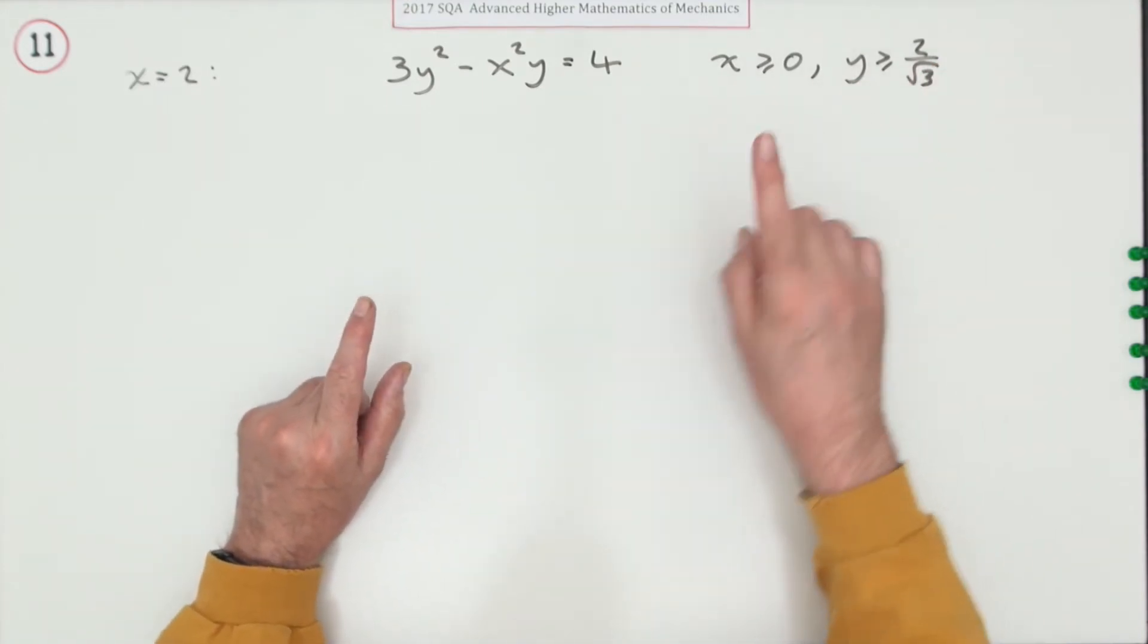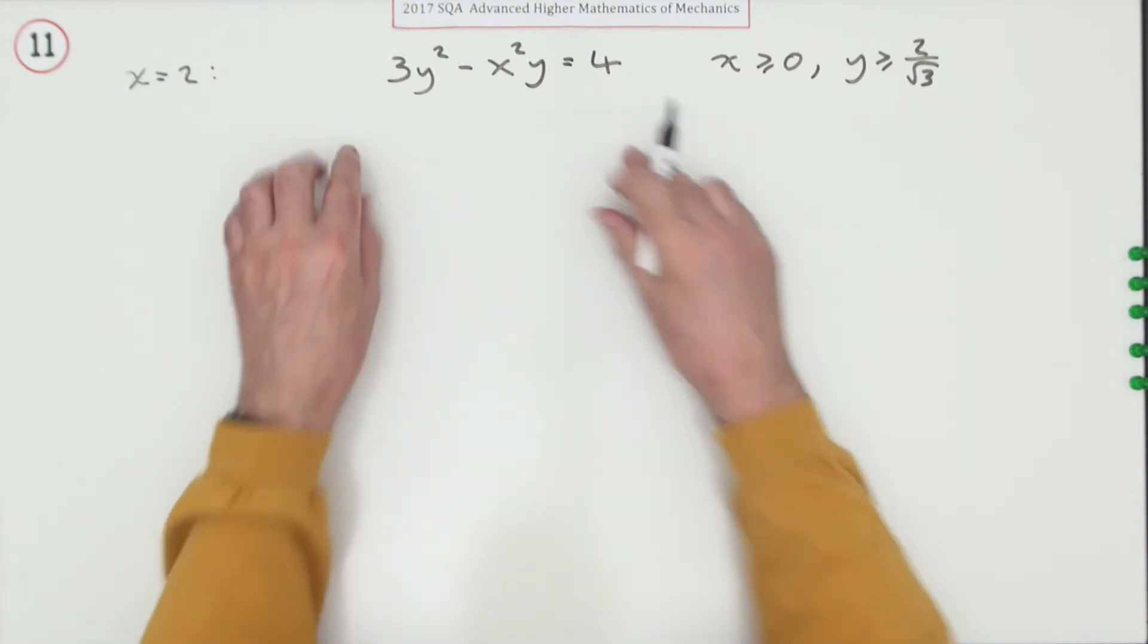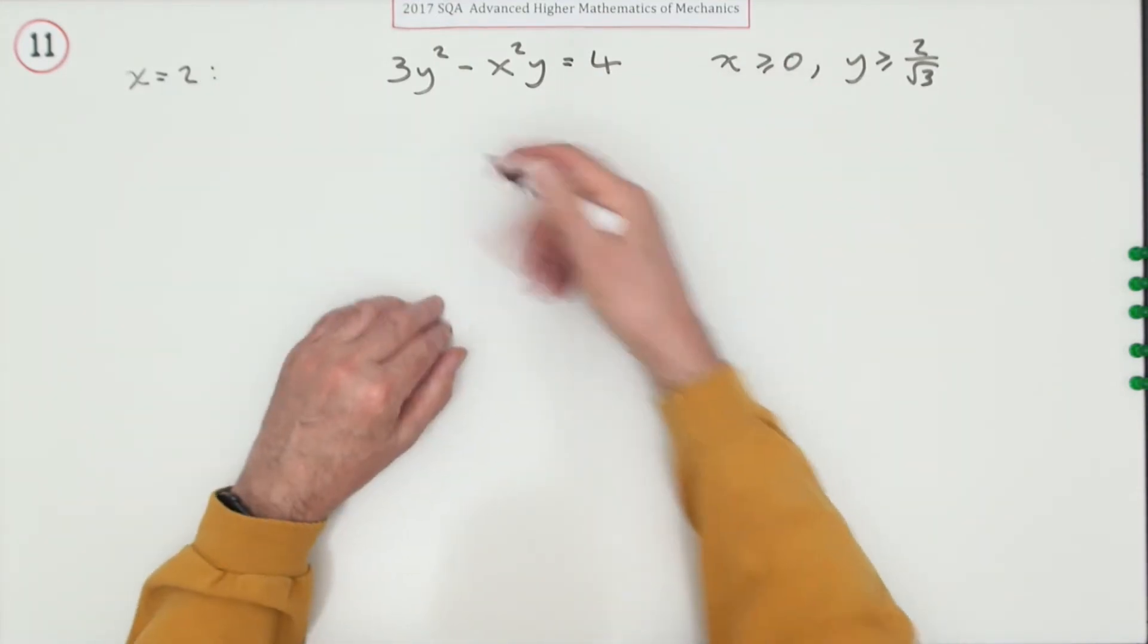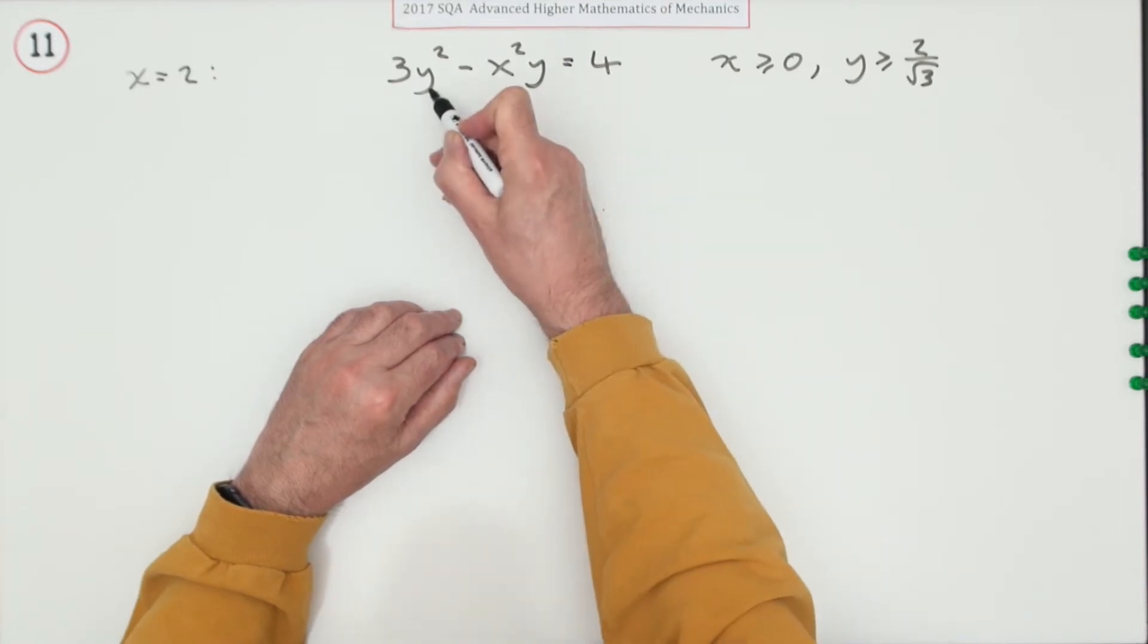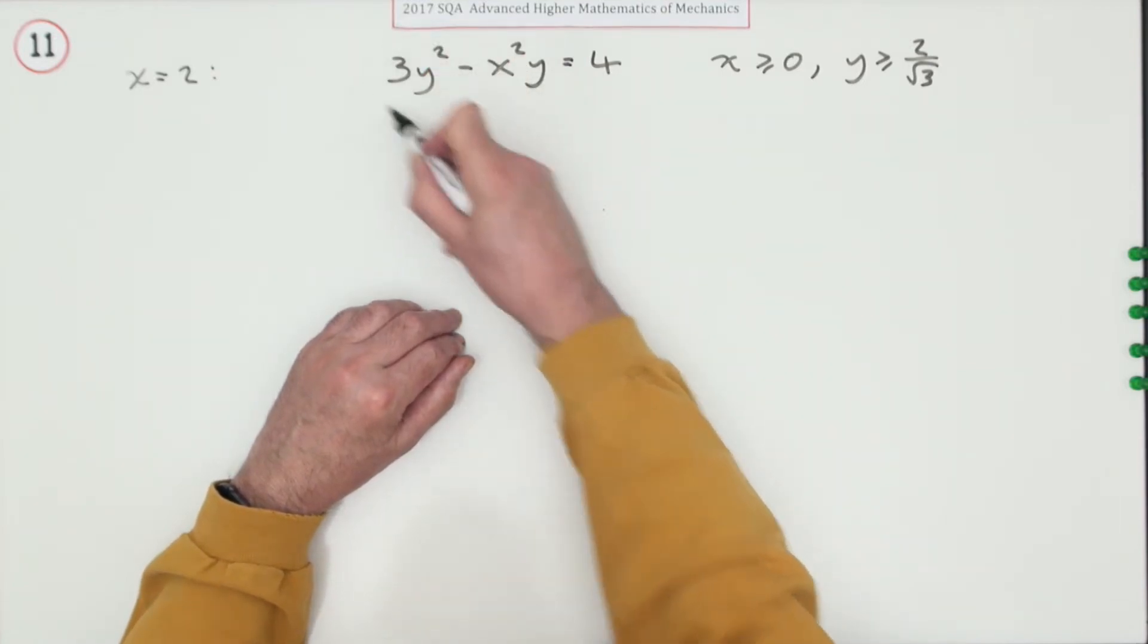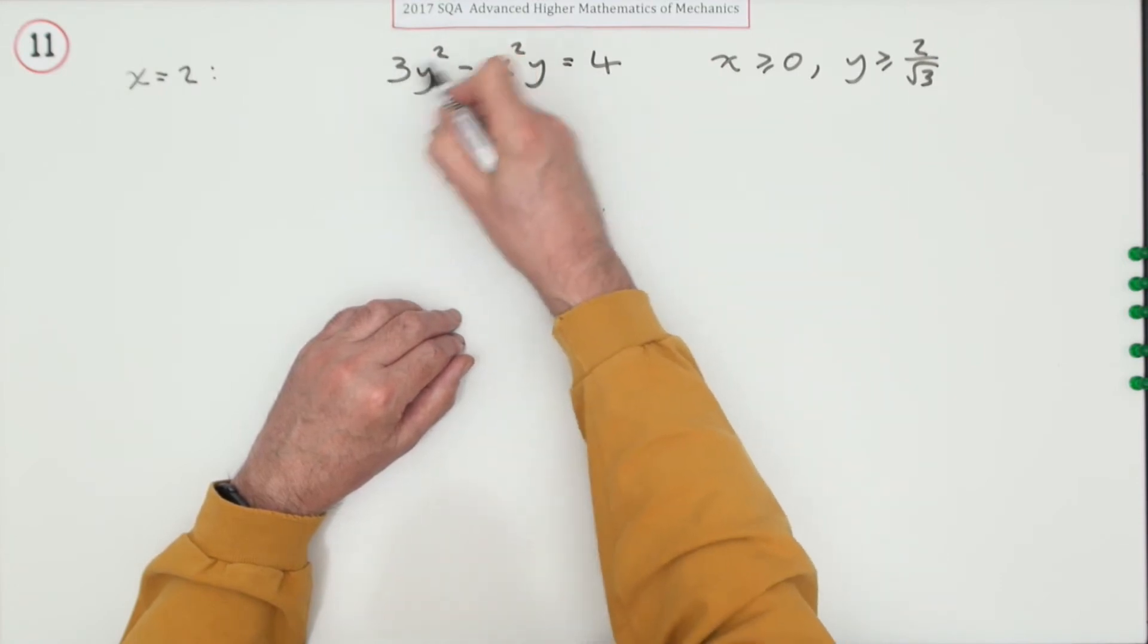So to find the gradient, differentiate those three terms. Since y is a function of x, when you differentiate 3y^2, you're differentiating a function of a function. It's 6 times y to the power 1, multiplied by the derivative of the inner function, which is dy/dx.